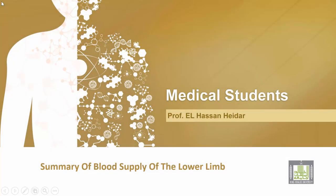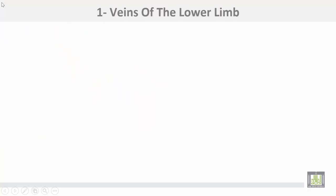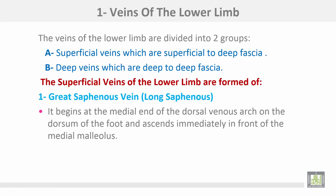Summary of blood supply of the lower limbs, starting with veins of the lower limbs. The veins of the lower limbs are divided into two groups: superficial and deep. The superficial veins are superficial to the deep fascia, while the deep veins are deep to the deep fascia.